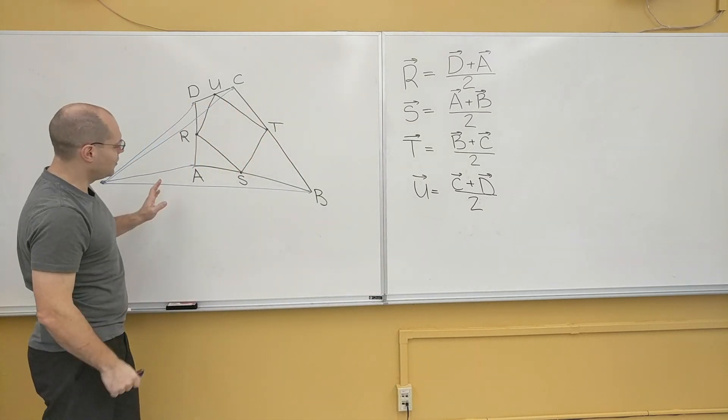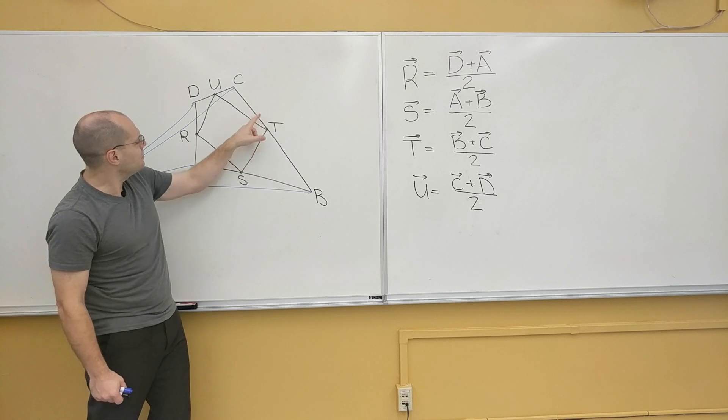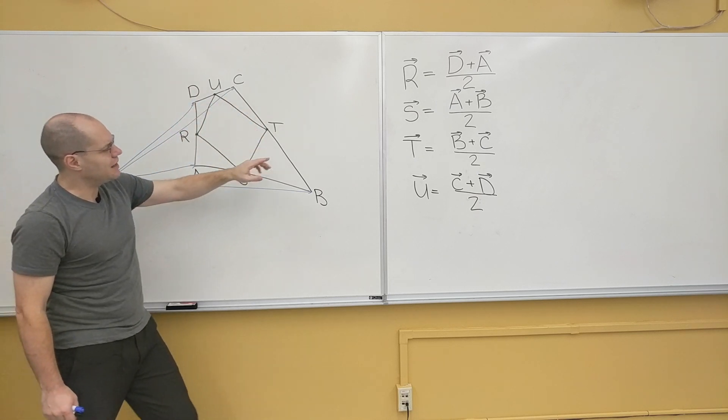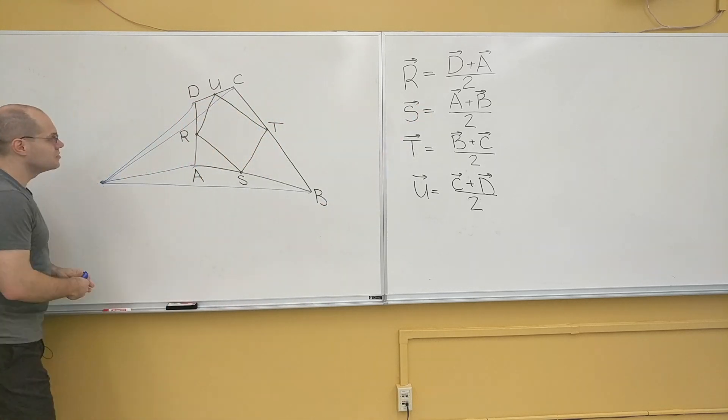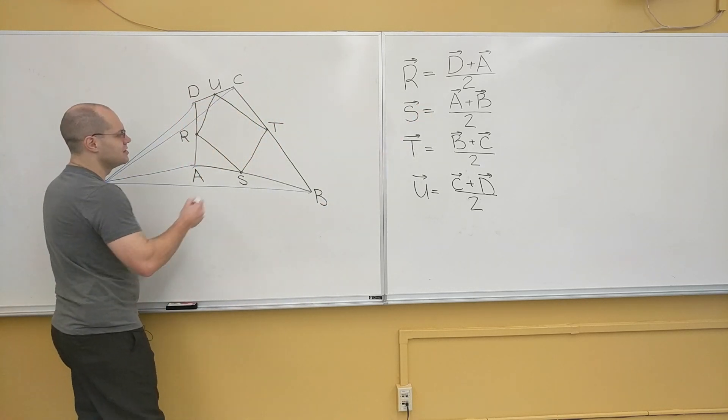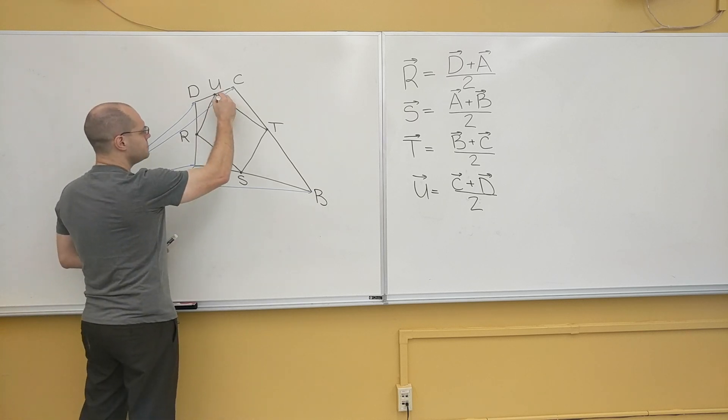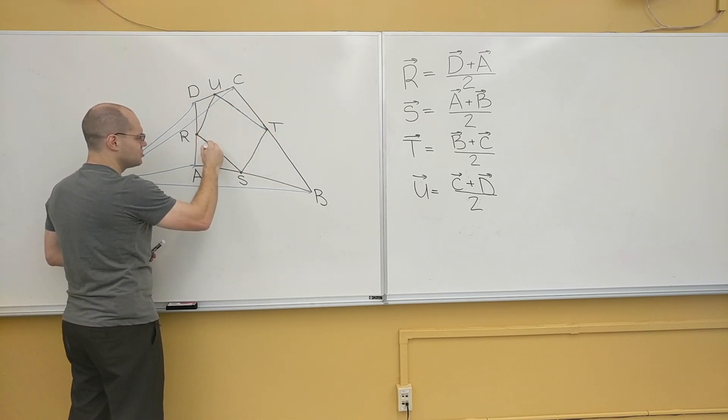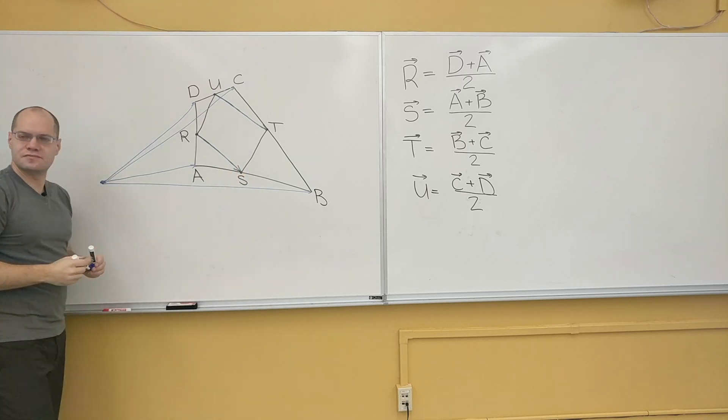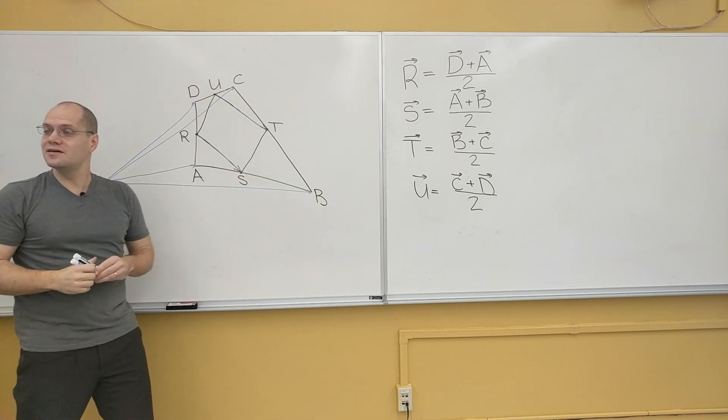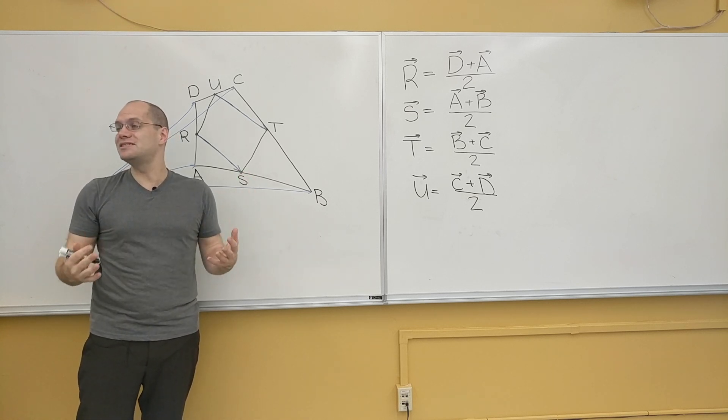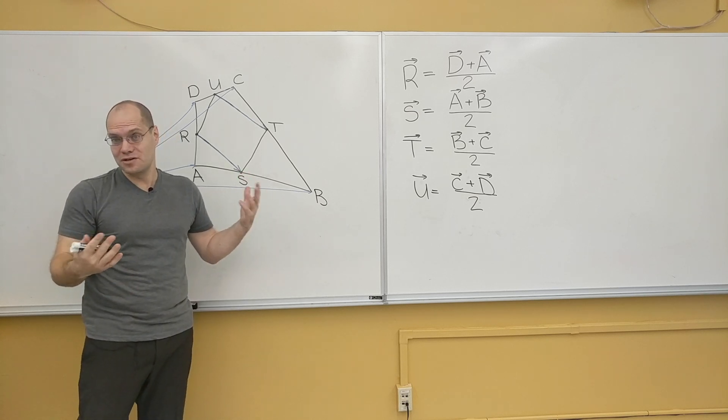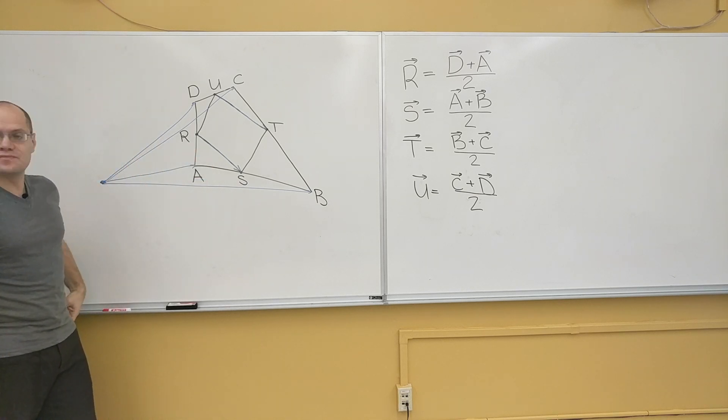So I've labeled each one of the vertices. I've labeled each one of the midpoints. And I've expressed each one of the midpoints in terms of all the vertices. So I will now express this vector right here and I'll compare it to this vector right here. And hopefully they're equal as vectors, and that will prove that they're parallel and have the same length. And that will conclude the proof that RSTU is a parallelogram.